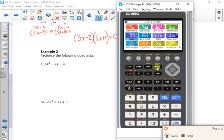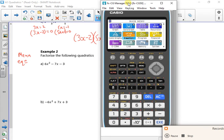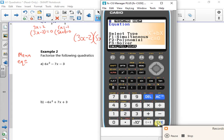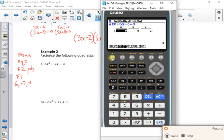So if I look at the first one. So I'm going to do menu, equation, which is A. It's a quadratic, so I'm going to do F1. And I'm going to put in 6, minus 7, minus 3. So 6, minus 7, minus 3.